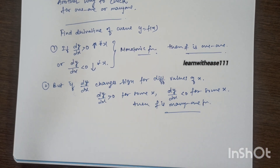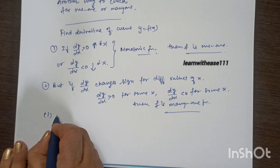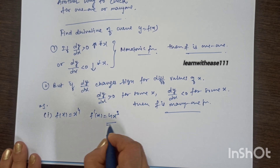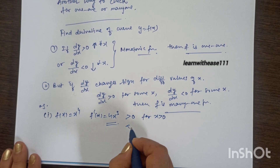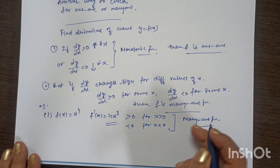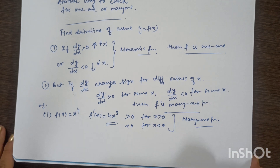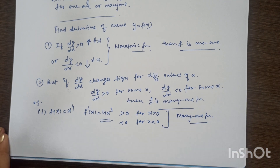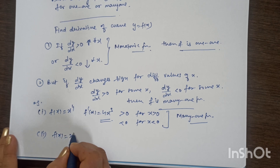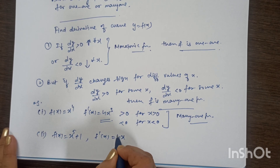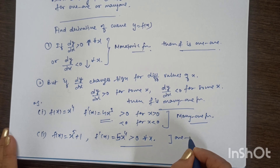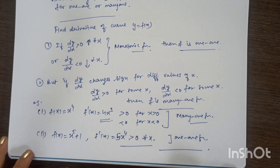This is an easy approach, but we still need to consider the domain. For example, x⁴: the derivative is 4x³, which is negative for negative x and positive for positive x, so it is many-one since the domain is all real numbers. For x⁵ + 1: the derivative is 5x⁴, which is positive for all x, so the function is one-one.